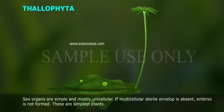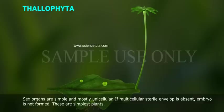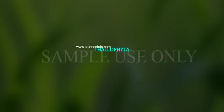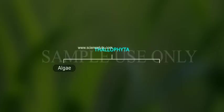Sex organs are simple and mostly unicellular. If multicellular, a sterile envelope is absent, and embryo is not formed. These are the simplest plants. The Division Thallophyta is classified into two classes: Algae and Fungi.